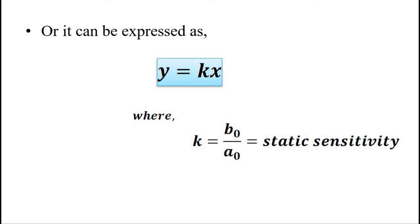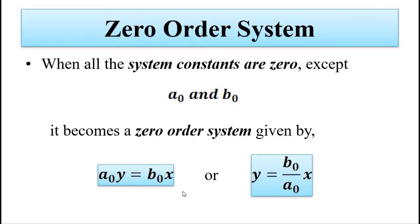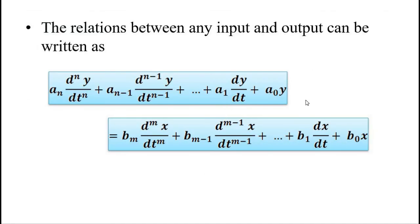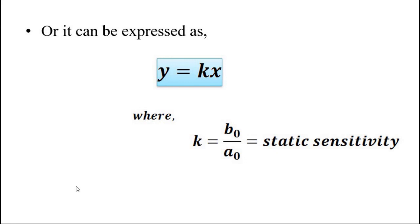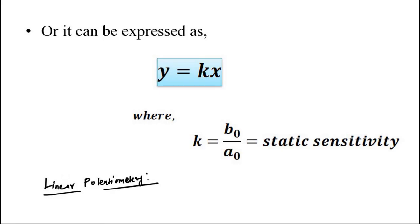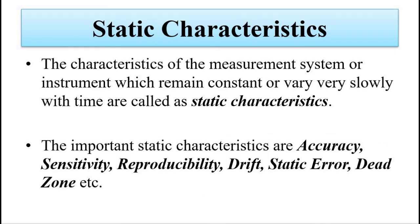This is the input-output relationship of a zero-order system, where all system constants are zero except a₀ and b₀. It is the simplest of systems. A practical example of a zero-order system is a linear potentiometer, which we have discussed in the sensors, transducers, and instrumentation section.